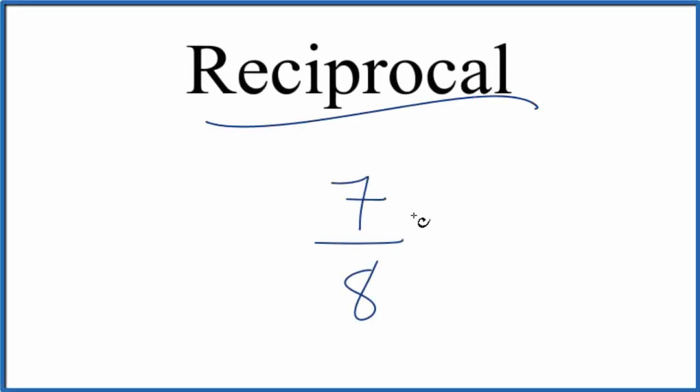Okay, let's find the reciprocal for 7 eighths. And here's how you do it. So we have 7 over 8.